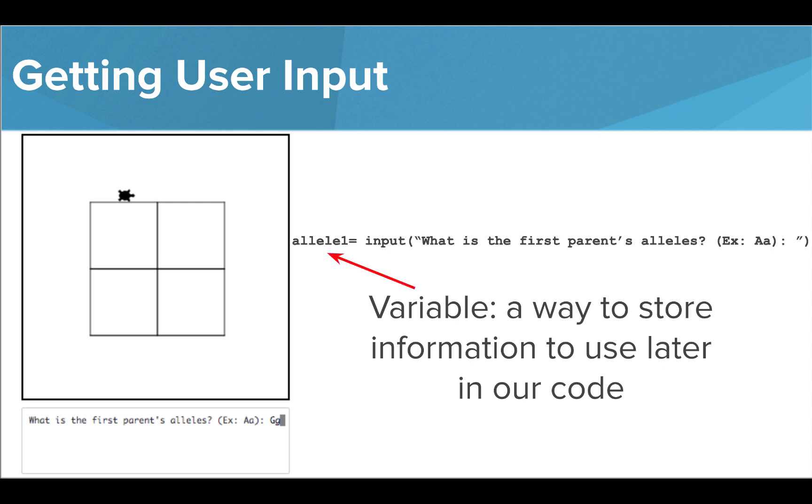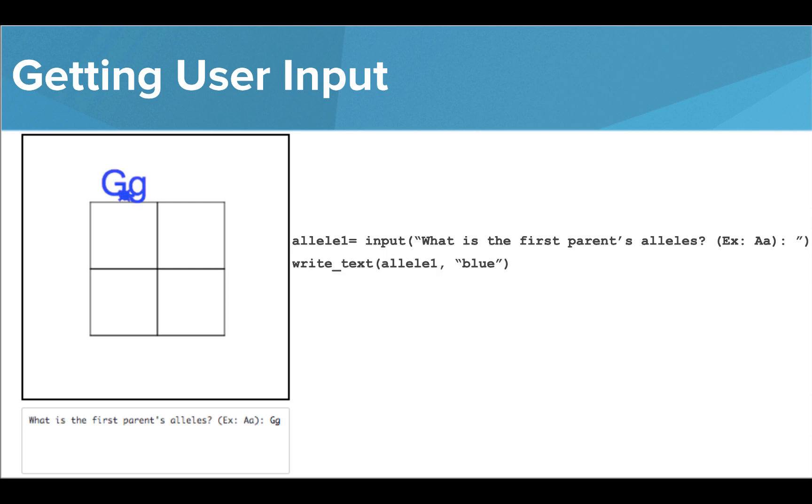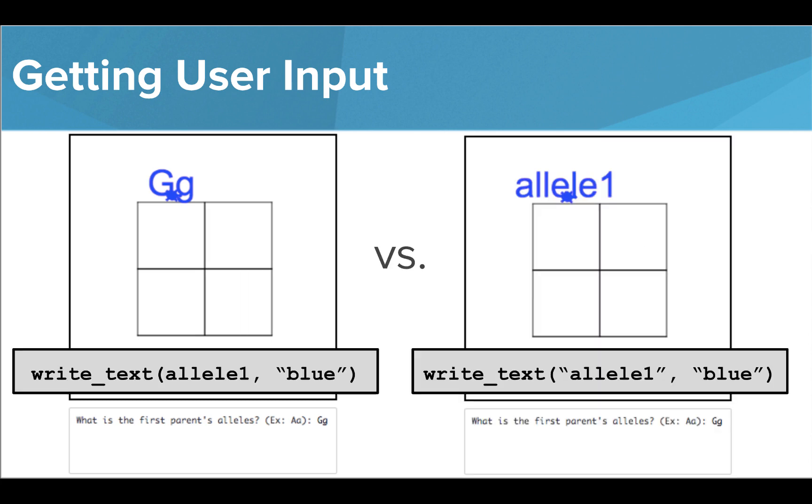We're going to save the information the user types in a variable called allele1. We don't want to use any spaces in our variable names, which is why we're writing this all as one word. Now that we've saved what the user typed as a variable, we can use this as the text to print to the screen by simply plugging the variable name into the write text command where we would normally write the text to print. An important note is that we do not use quotation marks around the variable name, or you'll simply be printing the name of the variable instead of the information that is stored inside it.